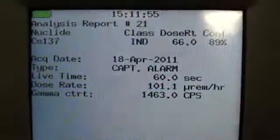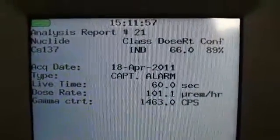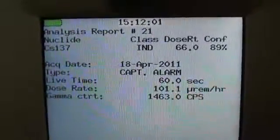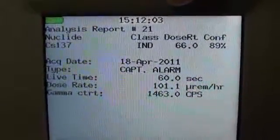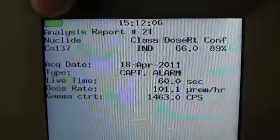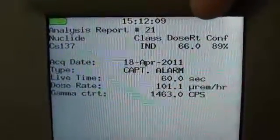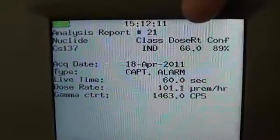Now this is a summary of the analysis report. As you can see from this report, this is report number 21. It has identified the nuclide as cesium-137, the class as industrial, and the dose rate is 66 counts per second.